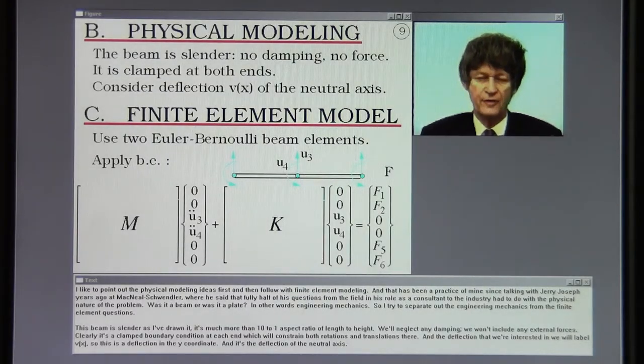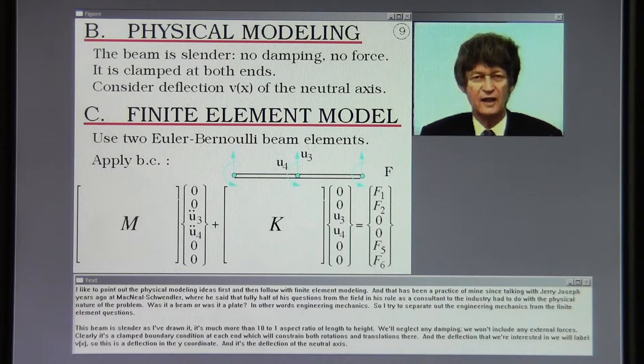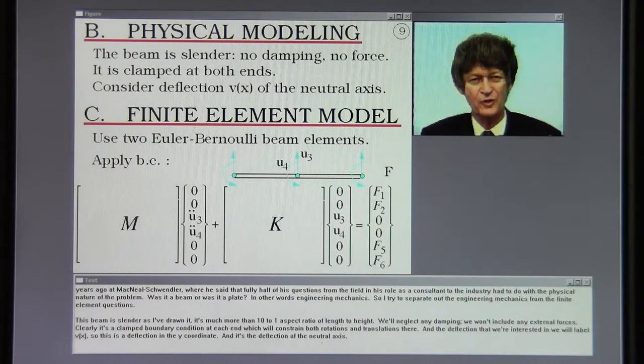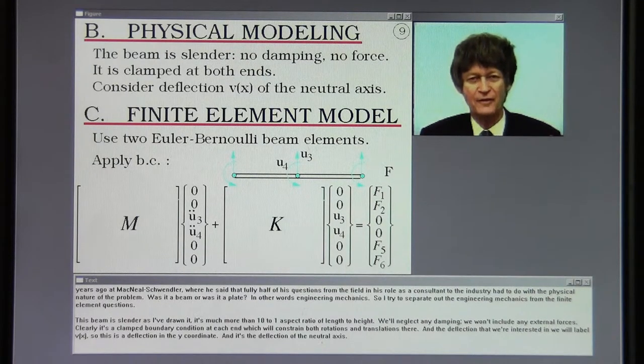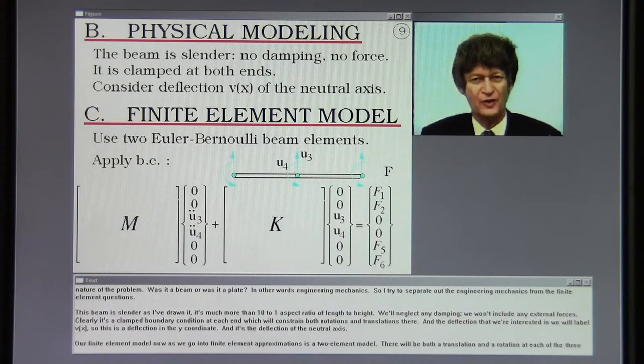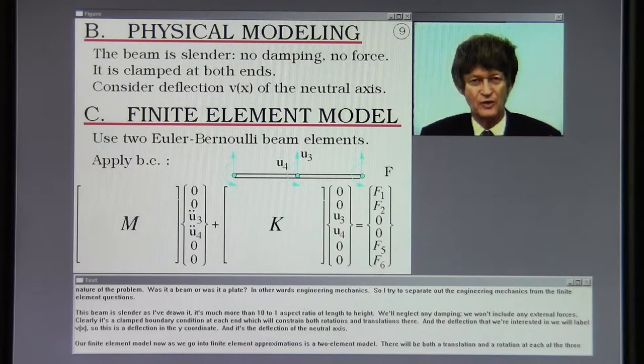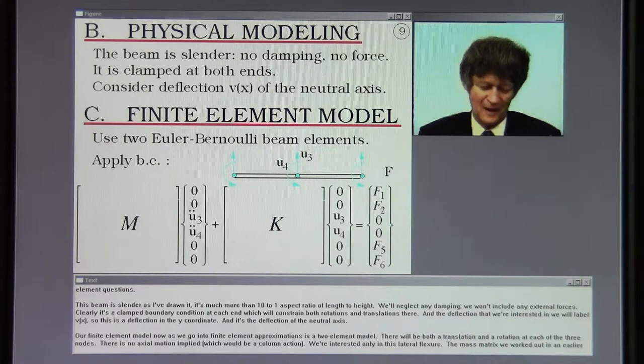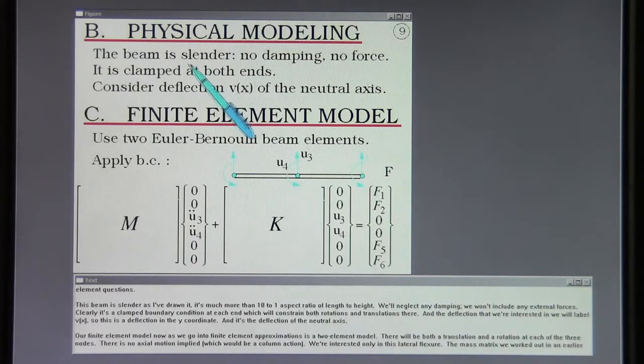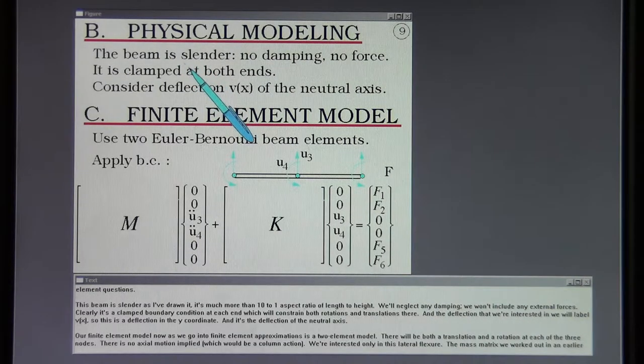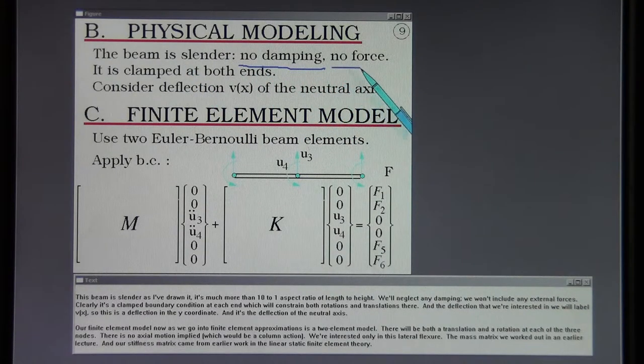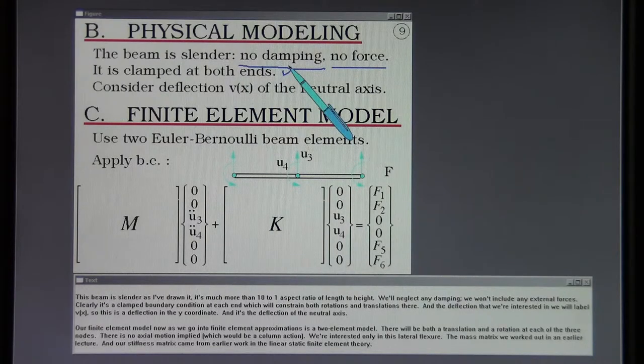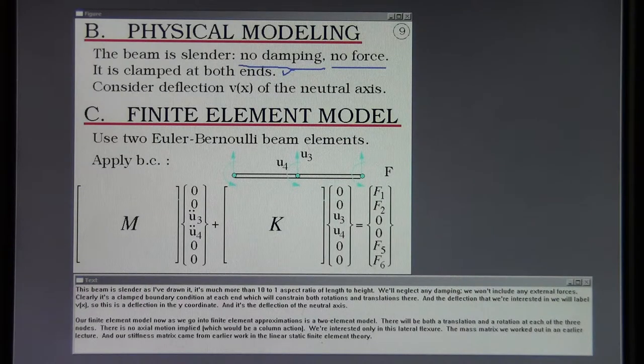I like to point out the physical modeling ideas first and then follow with finite element modeling. This beam is slender as I've drawn it. It's much more than 10 to 1 aspect ratio of length to height. We'll neglect any damping. We won't include any external forces. Clearly it's a clamp boundary condition at each end which will constrain both rotations and translations there. And the deflection that we're interested in we will label v of x. So this is a deflection in the y coordinate and it's a deflection of the neutral axis.